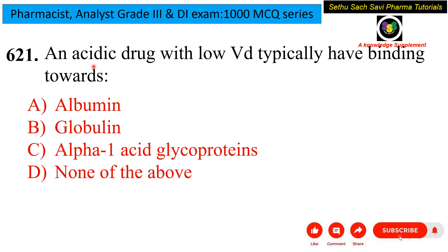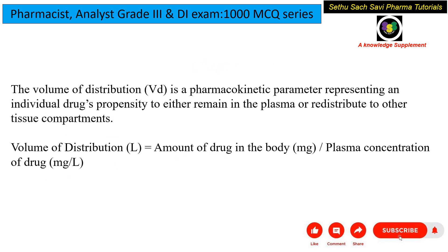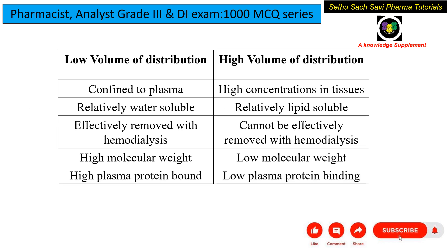From the question, the drug is acidic and has low VD — volume of distribution. VD is a pharmacokinetic parameter that determines whether the drug stays in the plasma or gets into the tissue compartment. The formula for apparent volume of distribution is: amount of drug in the body divided by plasma concentration of the drug. VD can be either high or low.